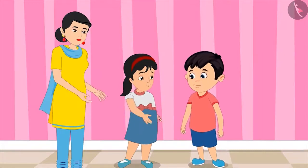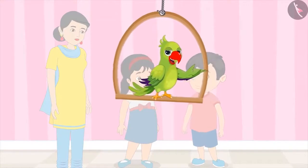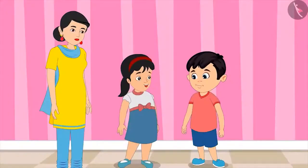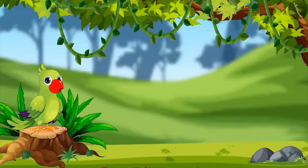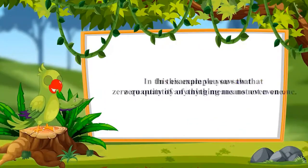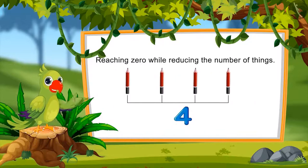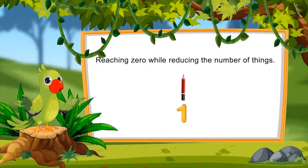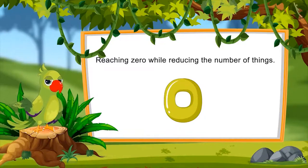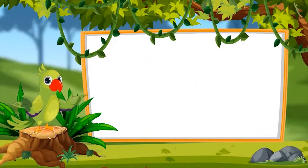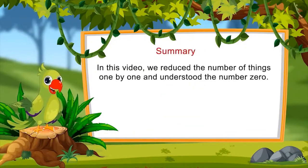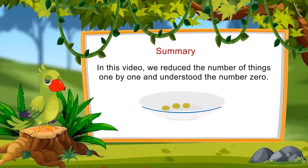Zero. Sister and mother were about to clap, but they quickly lowered their hands. Did you enjoy playing this game? So, children, in this example, you saw that zero quantity of anything means not even one. Can you also one by one reduce the number of things to reach the number zero? Look at the number of things around you and reduce their number one by one until you reach the number zero. So in this video, we reduced the number of things one by one and understood the number zero.